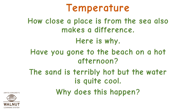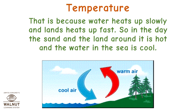How close a place is from the sea also makes a difference. Have you gone to the beach on a hot afternoon? The sand is terribly hot, but the water is quite cool. That is because water heats up slowly and land heats up fast. So, in the day, the sand and the land around it is hot and the water in the sea is cool.